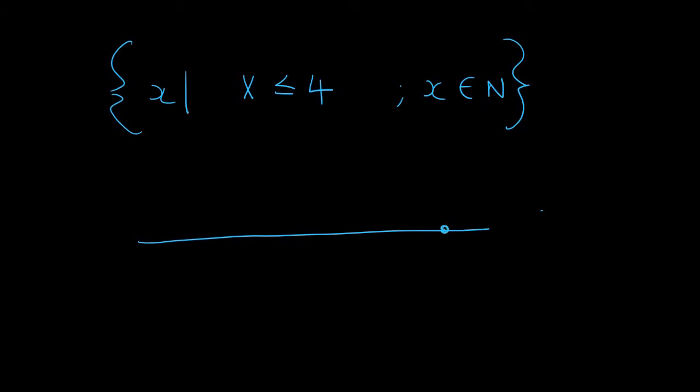Here's another one. So x must be smaller than or equal to 4 but x must be a natural number. Okay so that means we can have 3, 2 but then we'll stop at 1. Why?